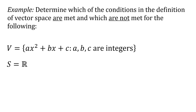In this video we're going to look at checking all of the conditions for a vector space to determine which are met and which are not met for this example. Our set V, our set of vectors, is really not a true vector in the sense you might think of from physics or calculus. Our set of vectors is a set of polynomials: ax² + bx + c, so quadratic polynomials where a, b, and c are integers.